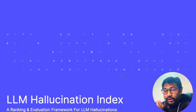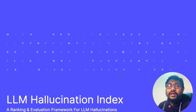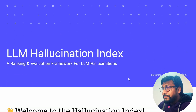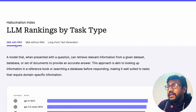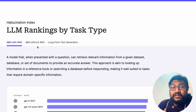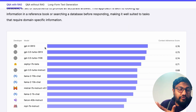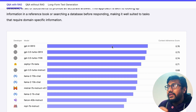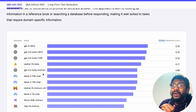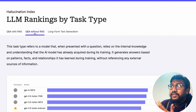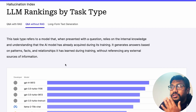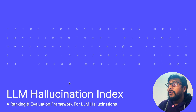Before further ado, let me quickly show you the ranking. They have done the ranking in three different task types. GPT-4 is the least hallucinating model in terms of context adherence score. The best open source model with the least hallucination in terms of context adherence score is Zephyr 7 billion beta. We'll discuss the different task types shortly.